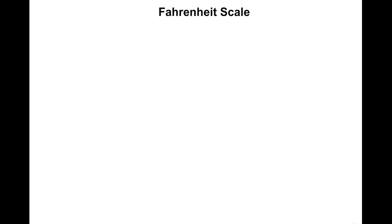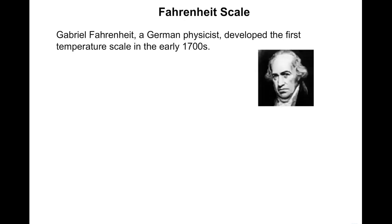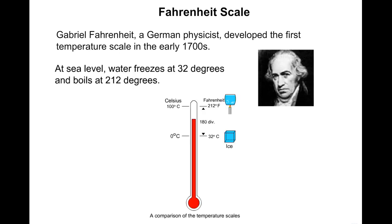Fahrenheit scale. Gabriel Fahrenheit, a German physicist, developed the first temperature scale in the early 1700s. At sea level, water freezes at 32 degrees and boils at 212 degrees.